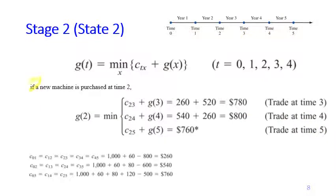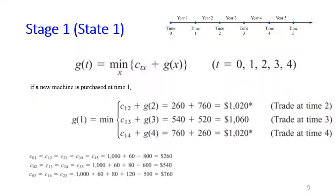If we purchase a new machine at time 2, we have three possible options: trade it at time 3, time 4, or time 5. Similarly, g(1) has three possible options: trade at time 2, time 3, or time 4. Notice here that the stage is not defined explicitly because the stage and state are effectively the same — if we are at stage time 1, the state is also 1, meaning we purchased a new machine at time 1. So the stage is not defined explicitly in this recursion.